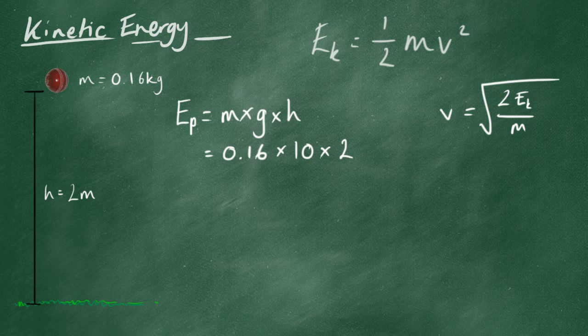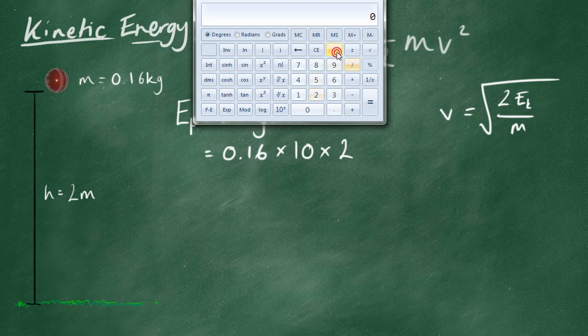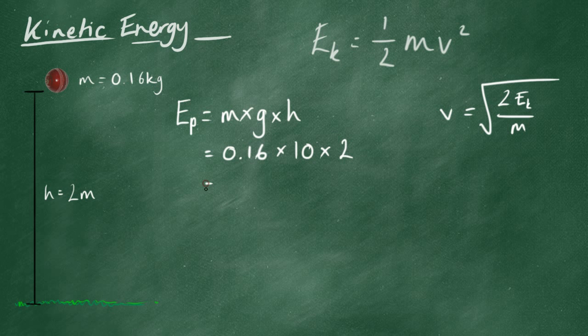So, let's go with the calculator again. 0.16 times 10 times 2 equals 3.2. So, we have 3.2 joules of gravitational potential energy.